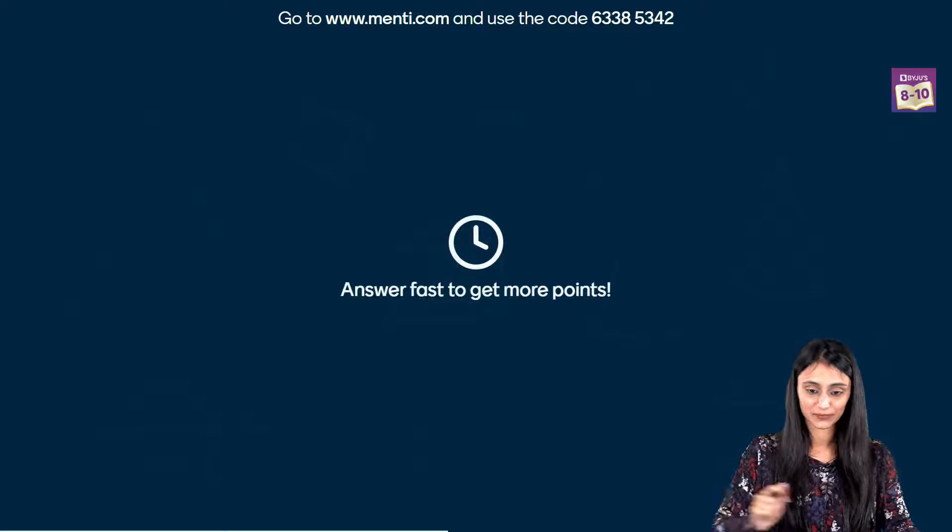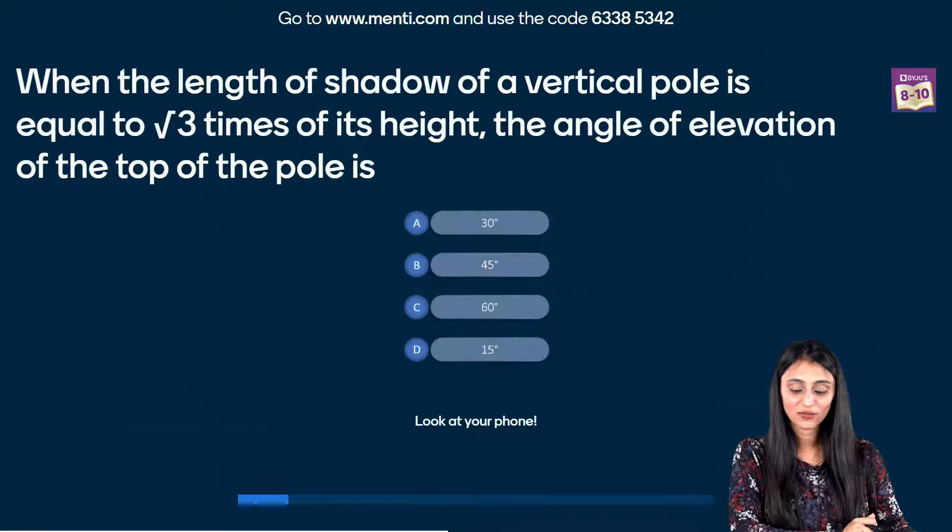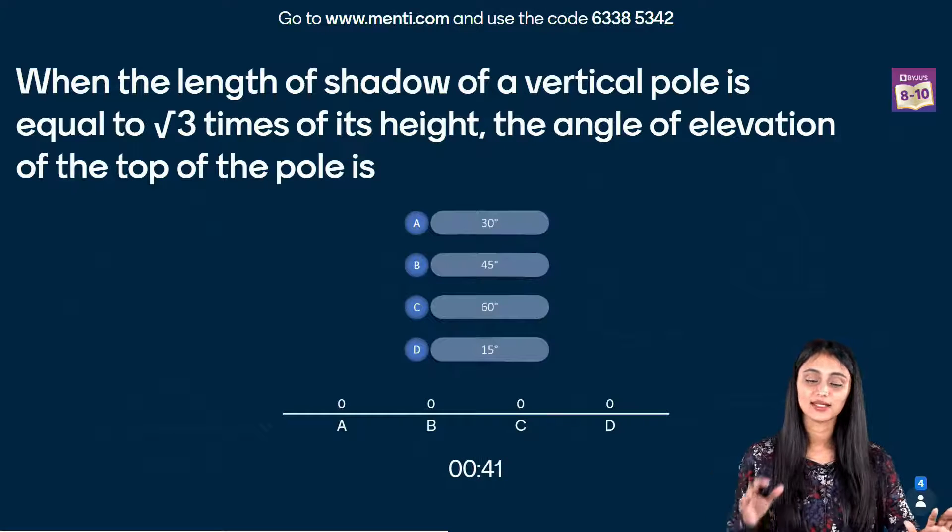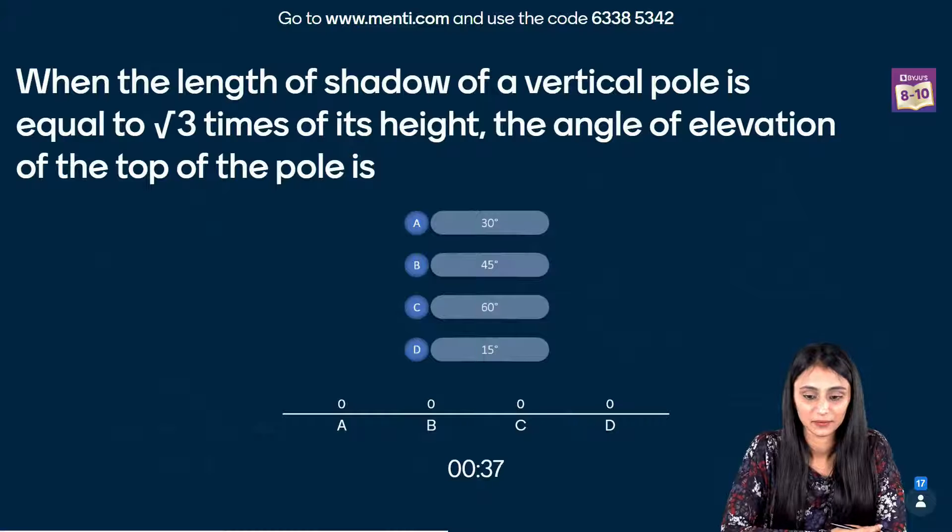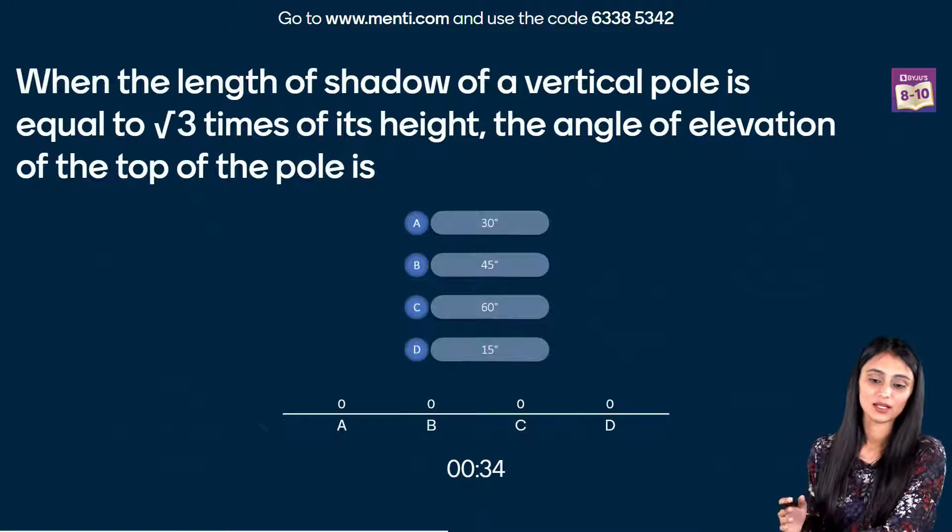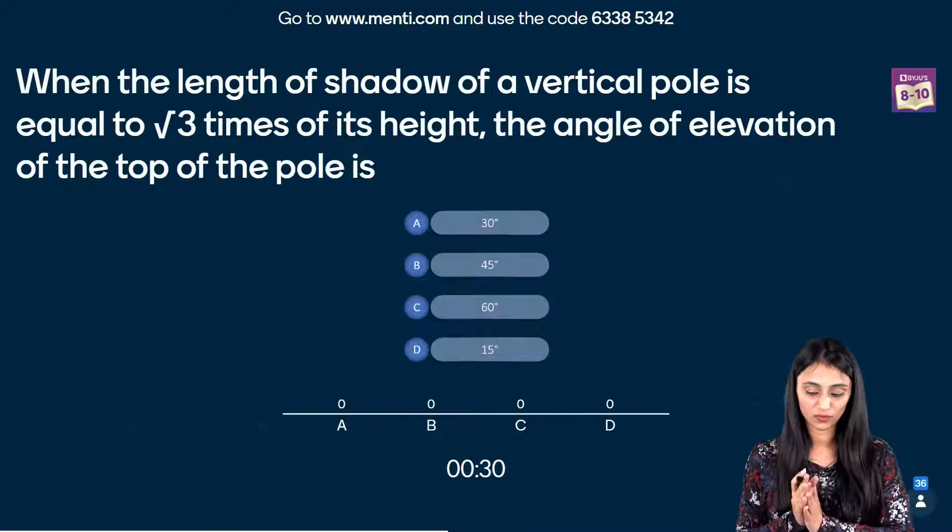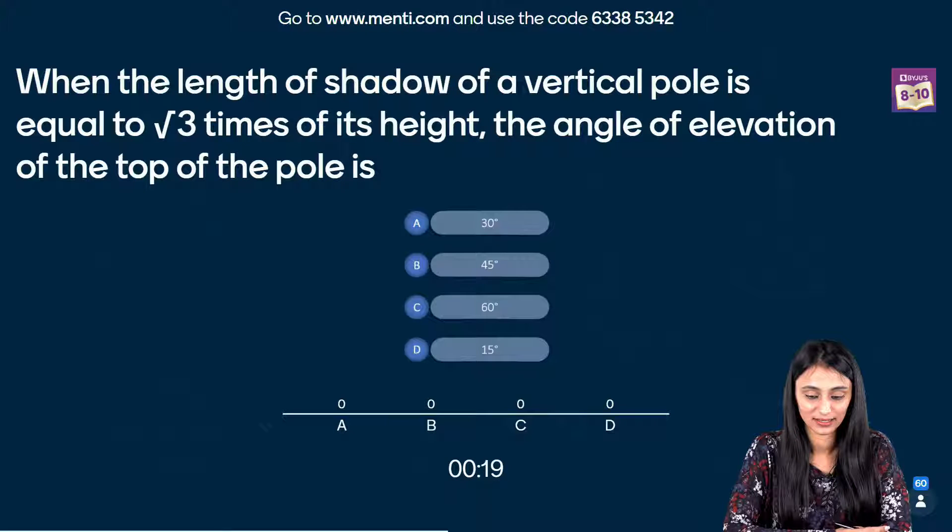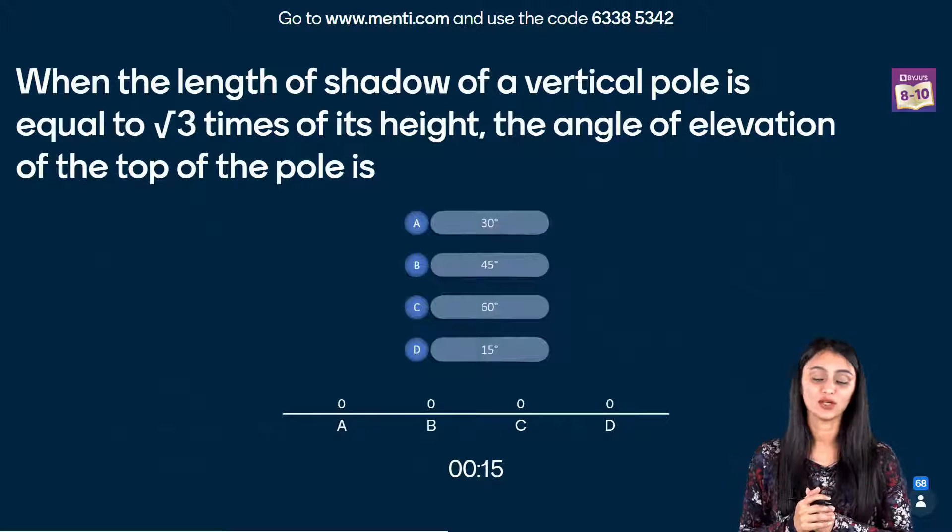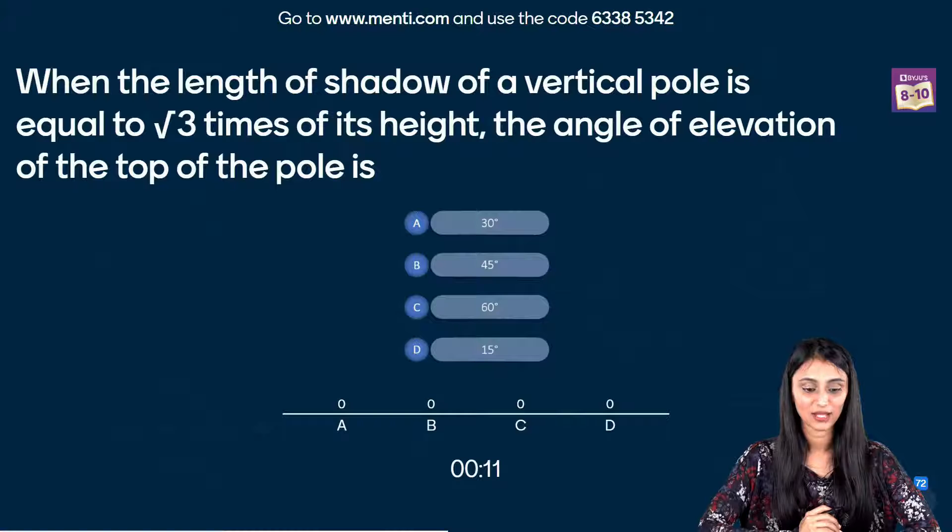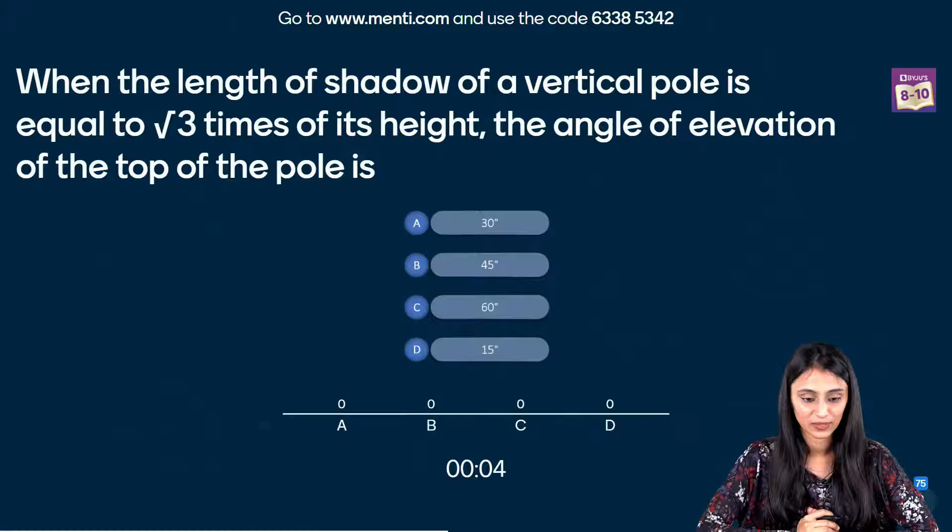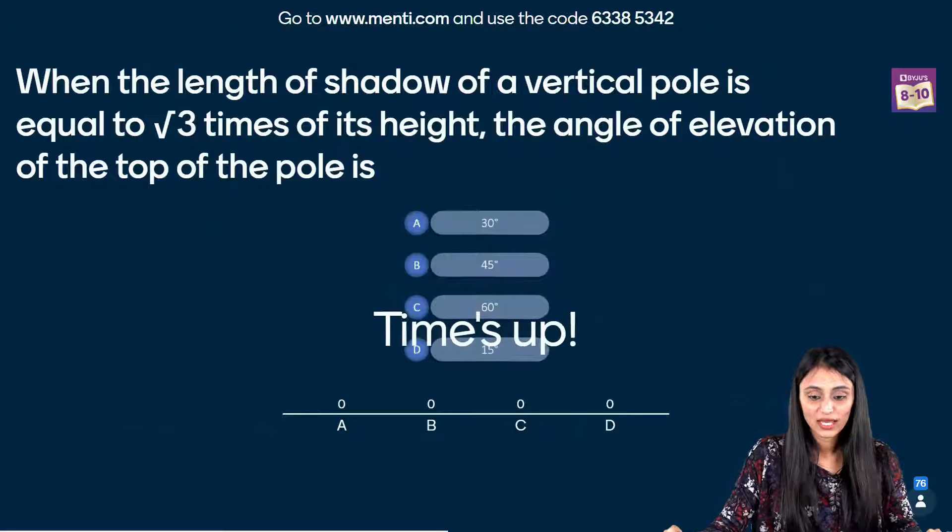Now let's take a look at our next question. That's question number 4. So when the length of shadow of a vertical pole is equal to root 3 times of its height, the angle of elevation of the top of the pole is. So in questions like this, make the figure first. It will be very simple for you to solve. Yes, Shitej. It's okay. It's even if you have joined late. Deepak, you were third. Yeah. Abhishek was seventh. Wow. It's okay, Shitej. You can attempt the rest of the questions from the quiz. It's fine.